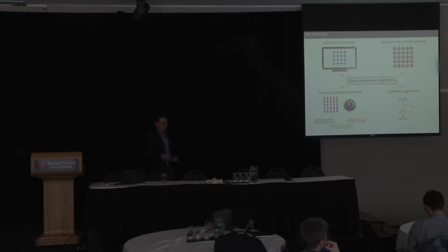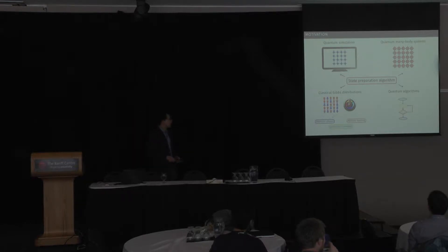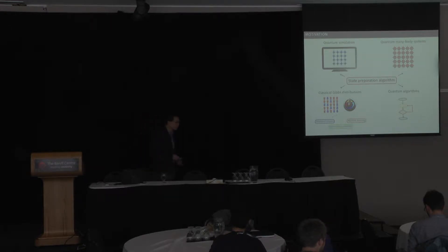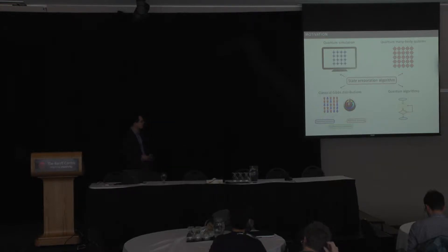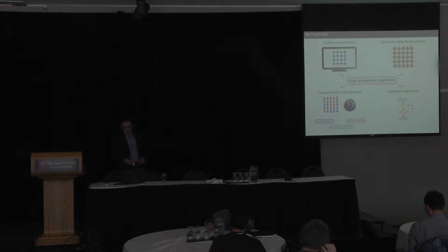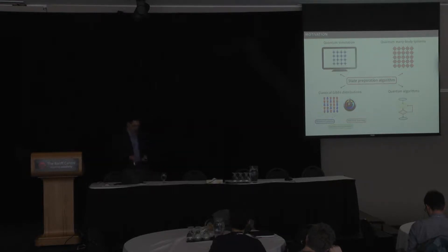For certain many-body states there has been a lot of progress in recent years — for example, expressing these kinds of states as projected entangled pair states, or tensor networks, which I will talk about in a moment. One can also do similar things for finite-temperature cases. A special case is to look at classical Gibbs distributions and sample from them — you might have classical Ising spins at some temperature and want to sample from the corresponding Gibbs distribution. This problem has a lot of applications even beyond physics.